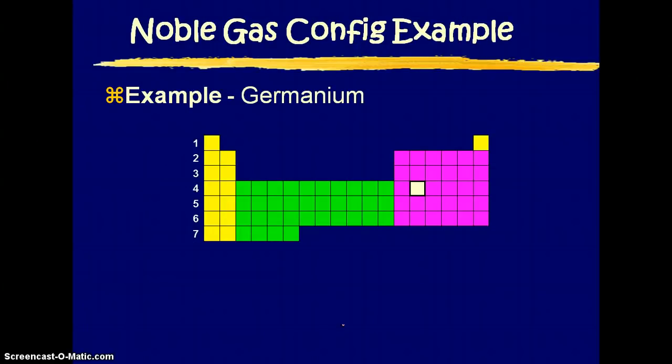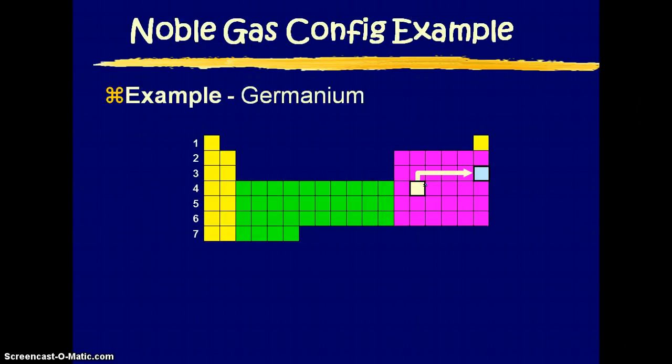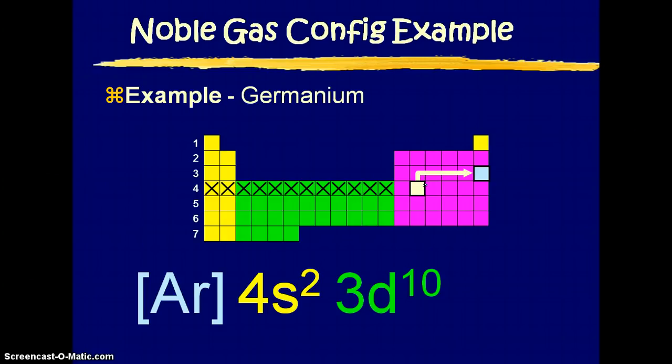All right, so we're going to look at germanium. Germanium is in this little block over here. Cord's in the way. All right, right here. And to look at the noble gas before him, we're going to go up one row and all the way over. That is the noble gas argon. So we write argon in brackets. Then we just continue on with the configurations. We got 4s2, 3d10, and then we stop at 4p2.